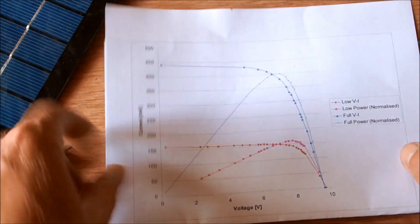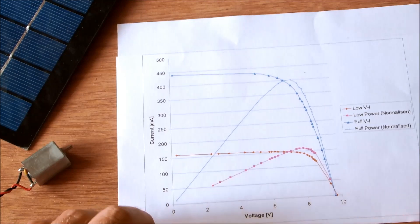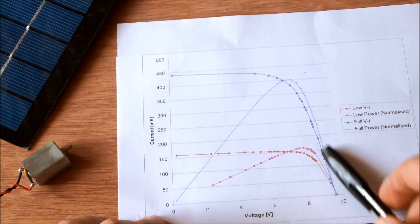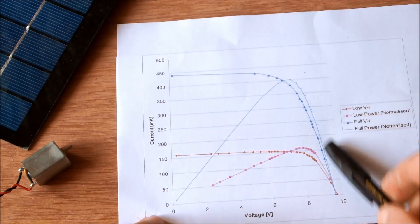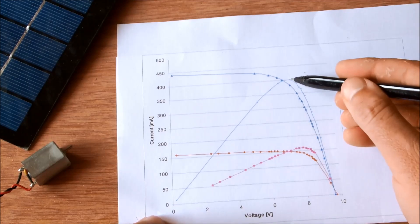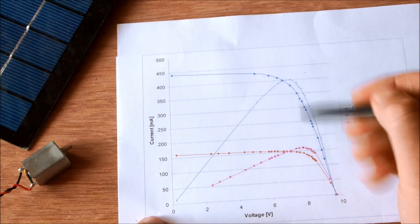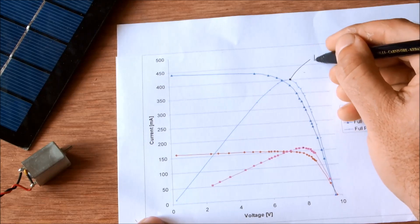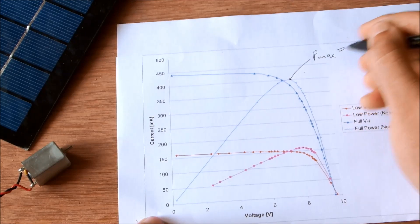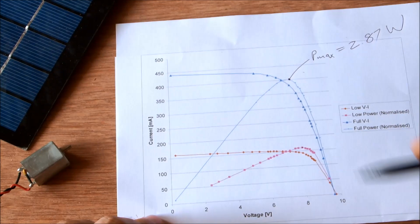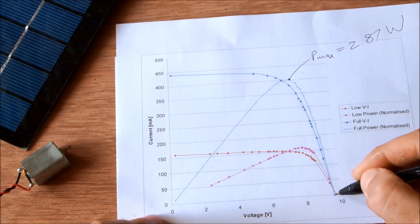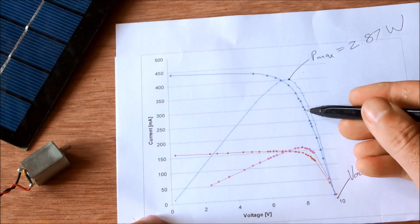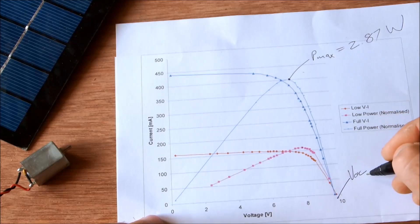Now I also went ahead and recorded values in full sun and here I have the two graphs. This is the data for the first test and then to scale the second test using full sun. Once again the power is not the absolute value, it's just normalized so that you can get an idea of how they compare. But once again with full sun maximum power was around 2.87 Watt. One thing to notice is that there is practically no difference in the open circuit voltage. As a matter of fact due to the higher temperature in full sun the open circuit voltage actually drops.